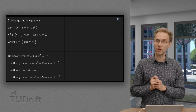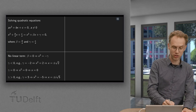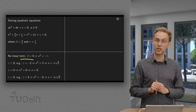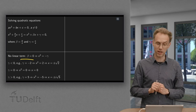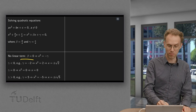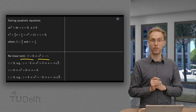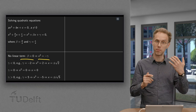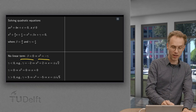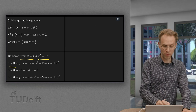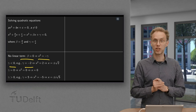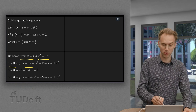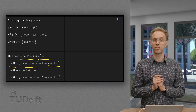Let us first look at the case where we have no linear term, so beta equals zero. In this case we have x squared plus gamma equals zero, or x squared equals minus gamma, and we can solve that. If gamma is negative, for example minus 2, then x squared equals 2, and x equals plus or minus the square root of 2.